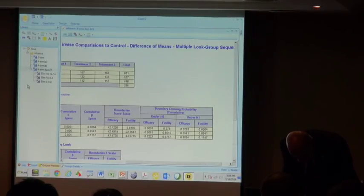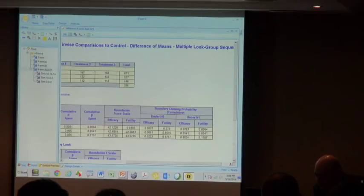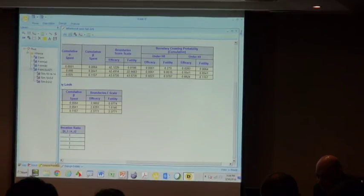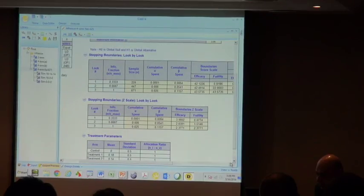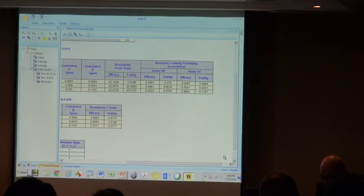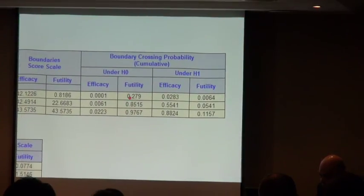Let's now look at this in somewhat more detail. Here you see the look by look. This is the stopping boundary scaled on the efficacy and futility scale. This over here is the so-called exit probabilities. Under the null hypothesis you might stop right away at that very first look, or there's certainly an 85% chance that you will exit by the second look. Overall there's less than a 2.5% type one error and 88% power.